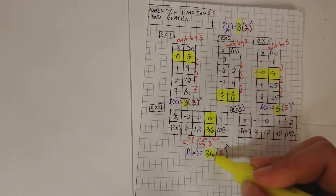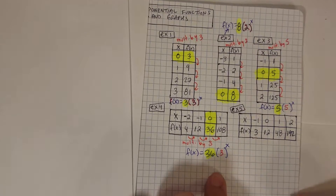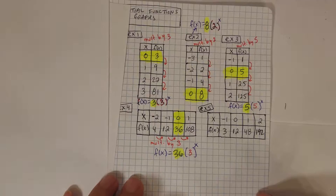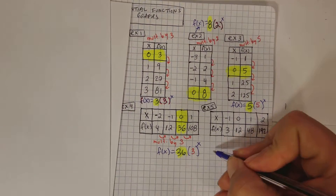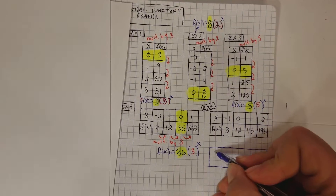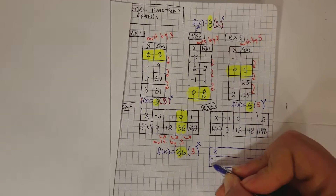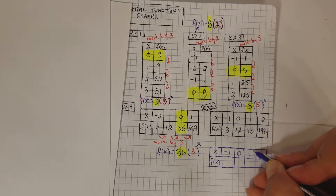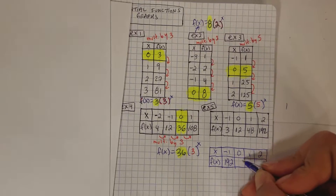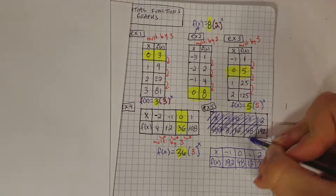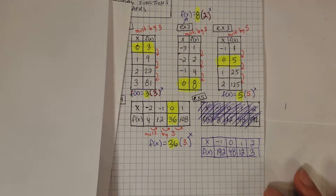I was looking forward to doing one that was a fraction, so I'm going to change this problem altogether so I can give you guys a fraction to work with. So example number five — I do want to give you guys an example in which you have division rather than multiplication, so you can see the difference. I'm going to leave the numbers the same: negative 1, 0, 1, 2. But I'm going to make 192 be on this side, then 48 here, 12 here, and 3 here. So this will be our example number five to illustrate what happens when you actually have division instead of multiplication.